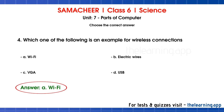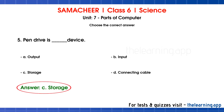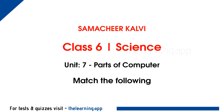Fifth question: Pen drive is a blank device. Options are A) output, B) input, C) storage, D) connecting cable. The correct answer is option C, storage. A pen drive is used to store data, so it is a storage device.